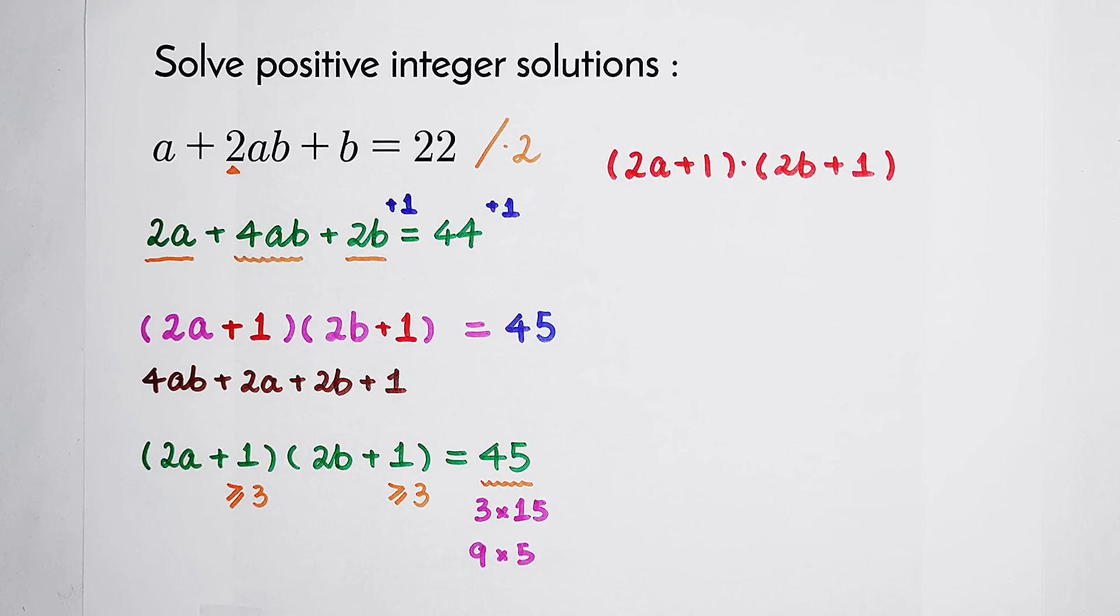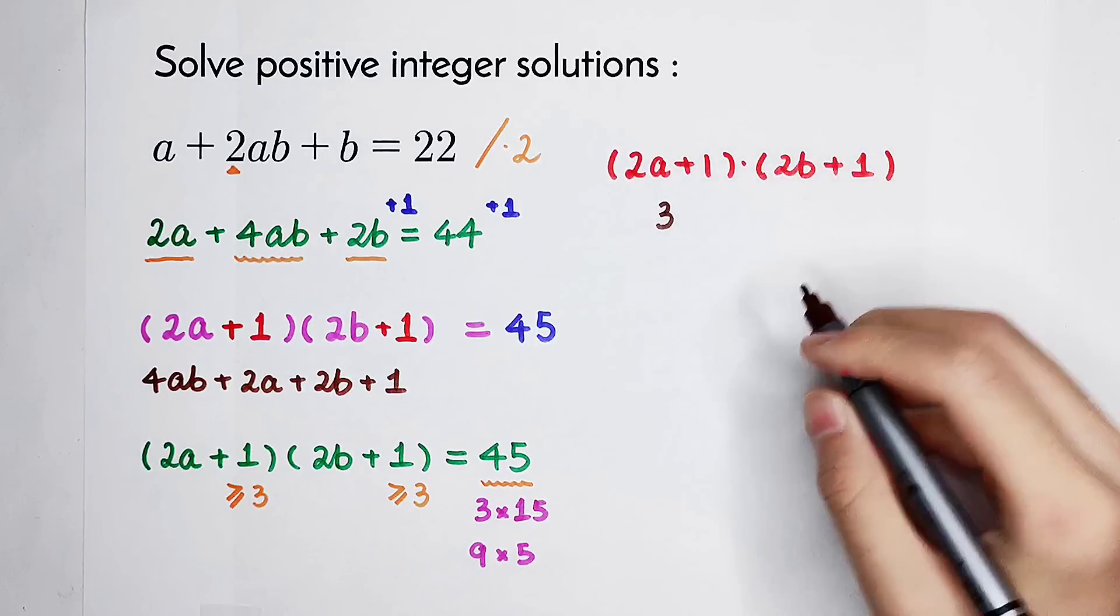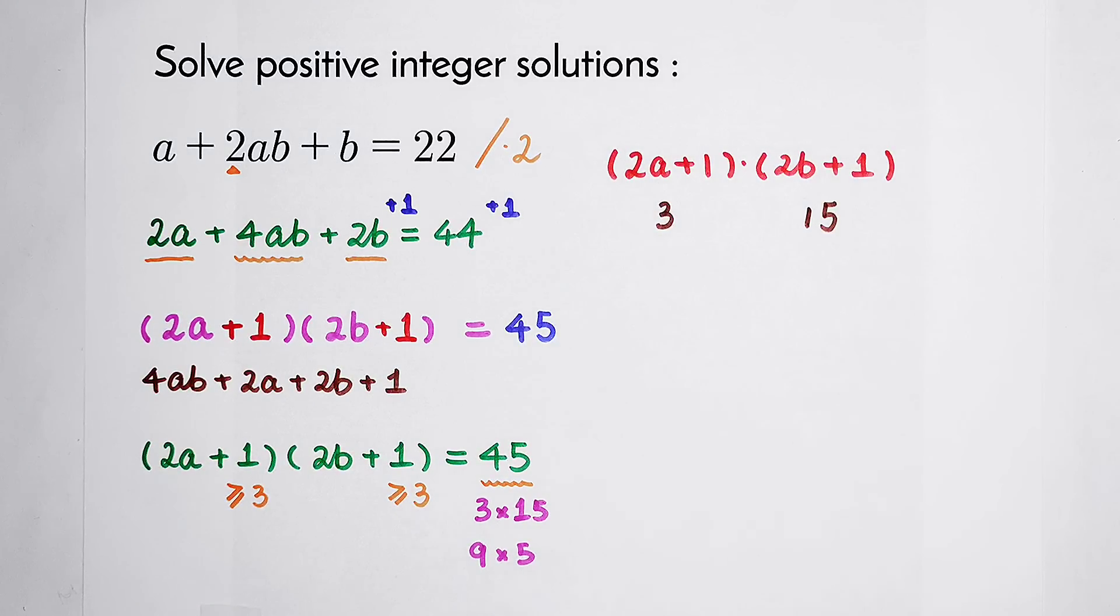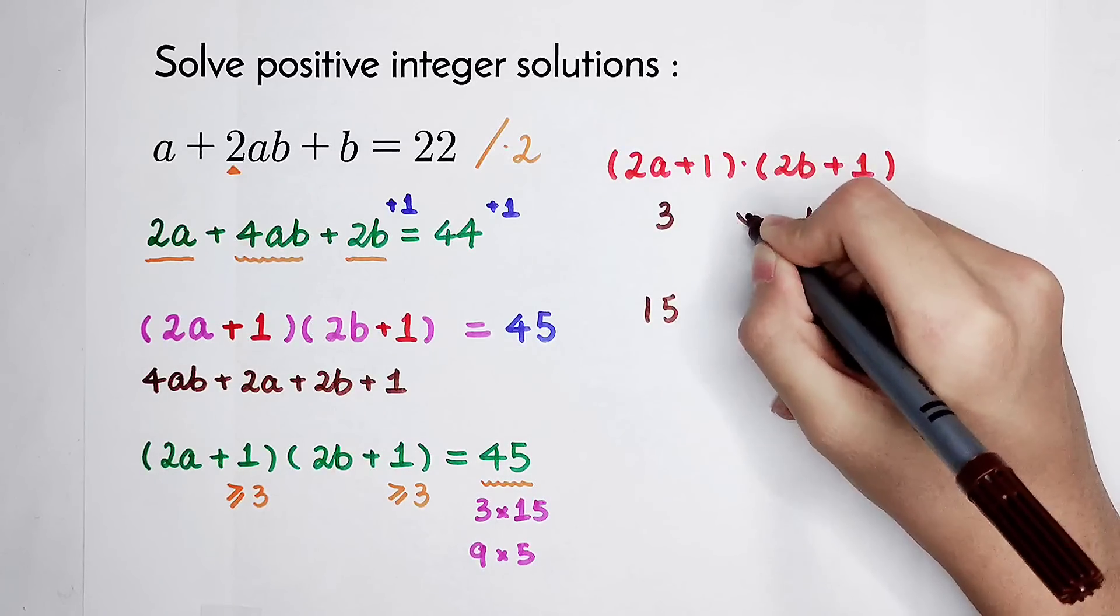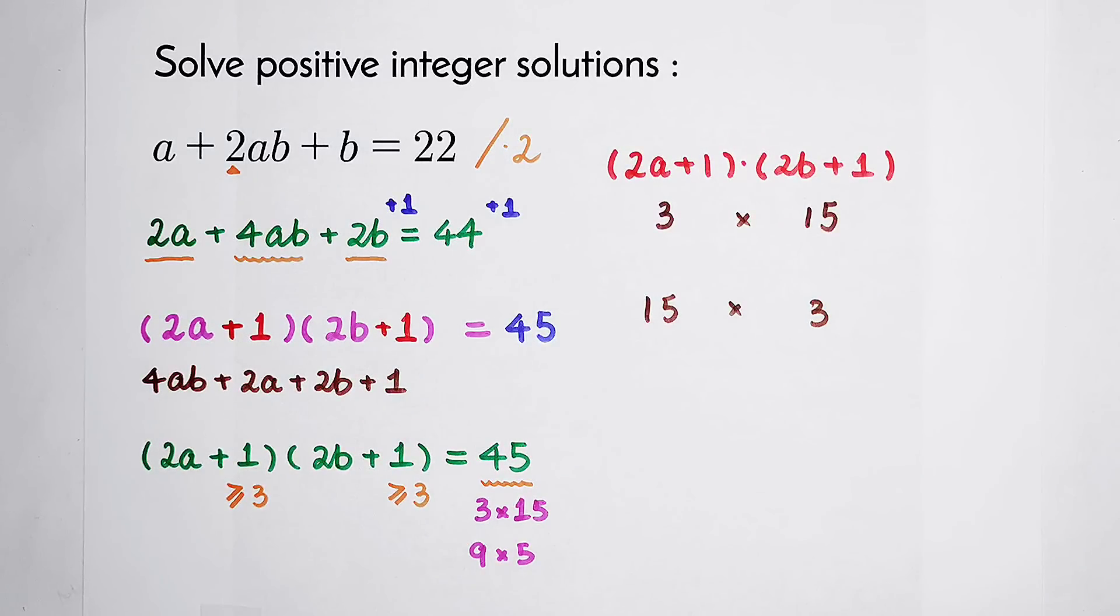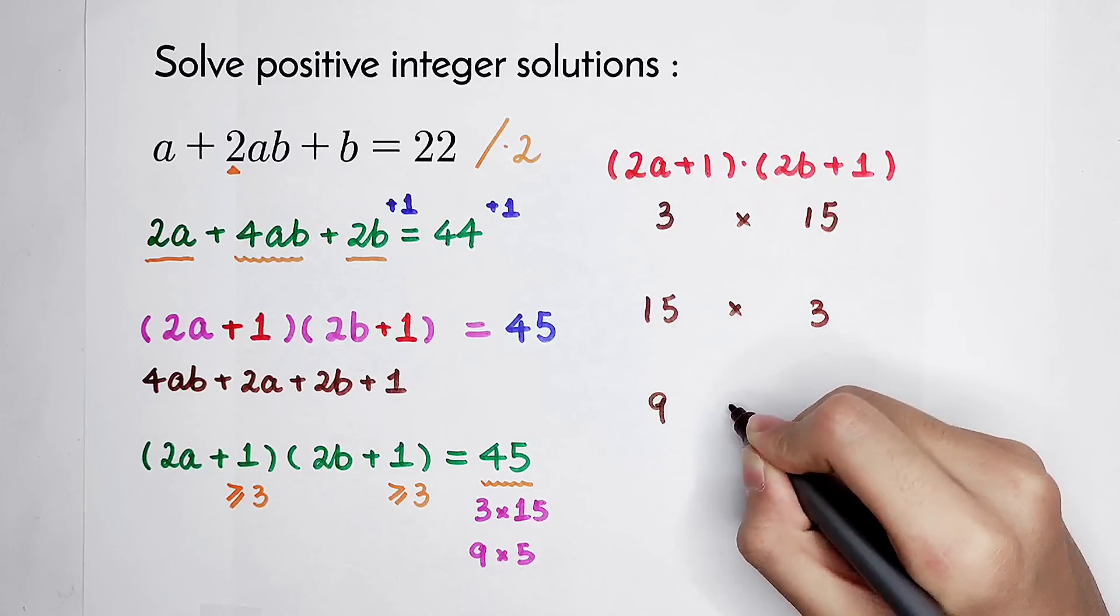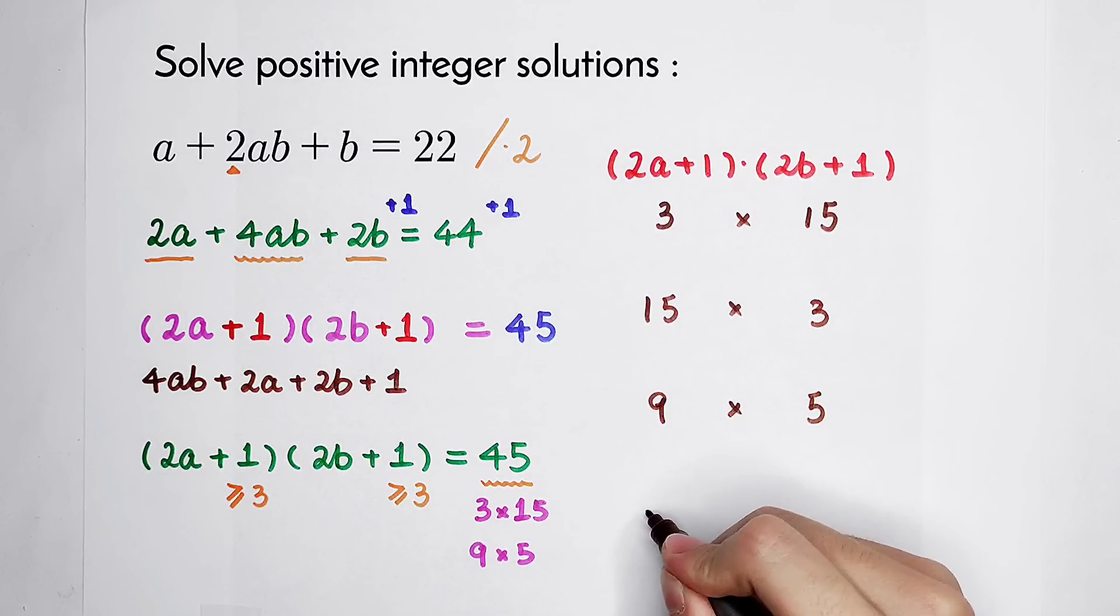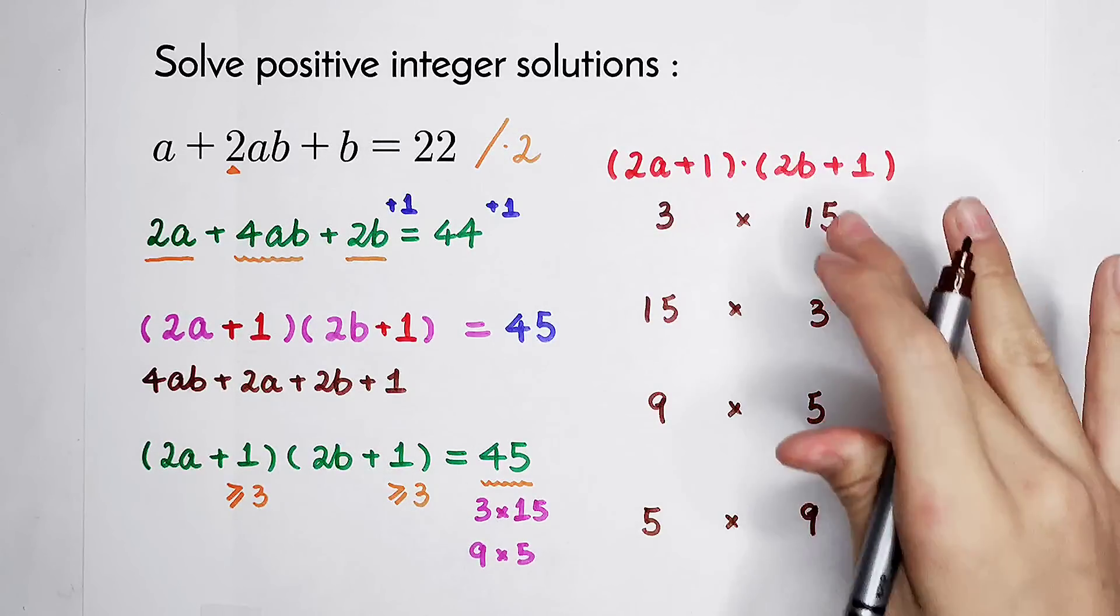So now. 2a plus 1. Maybe 3. 2b plus 1, 15. Maybe 15, 3. They change the order. And then 9, 5. Maybe 5, 9. Only these 4 cases.